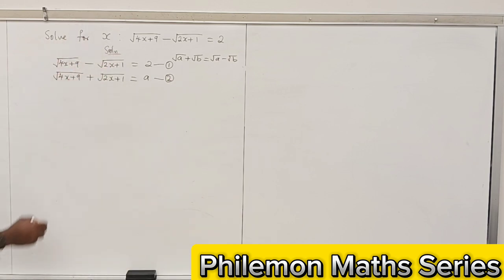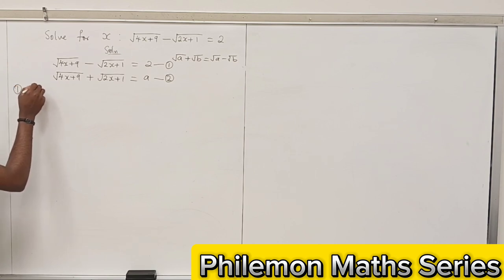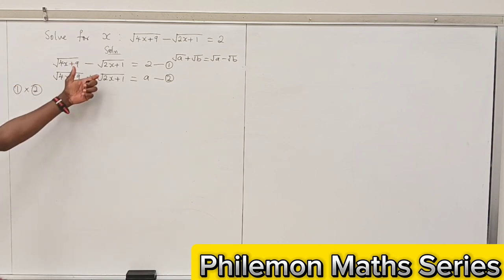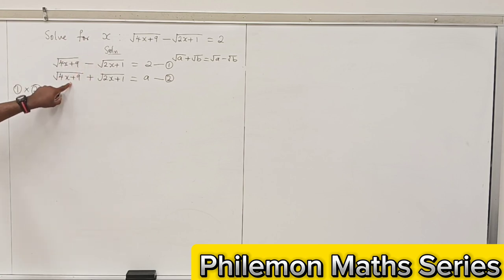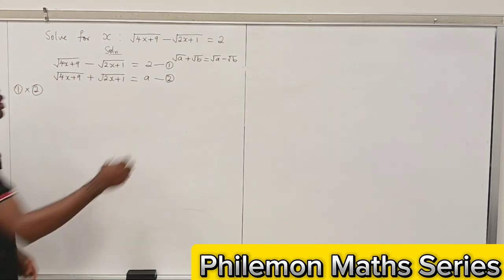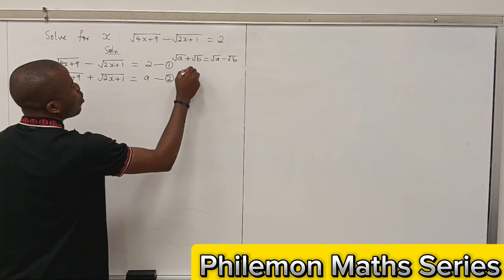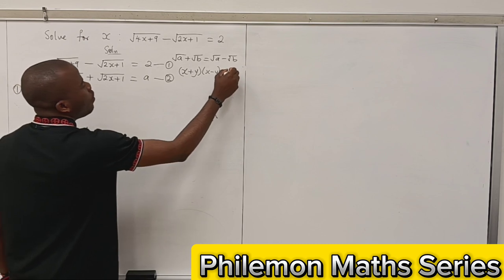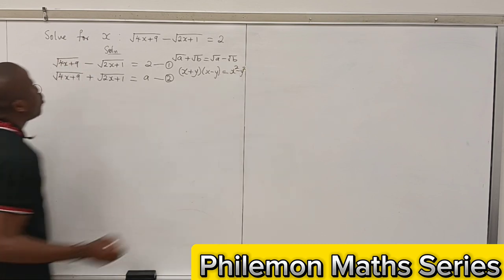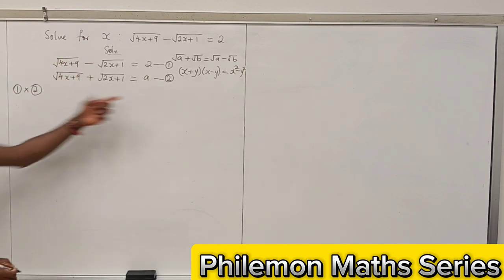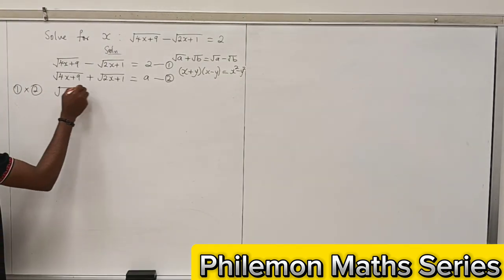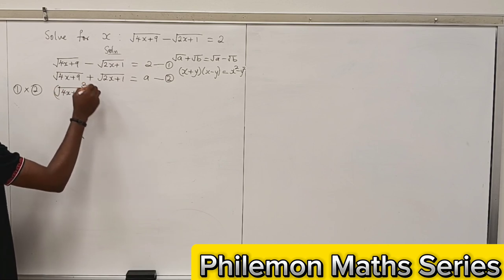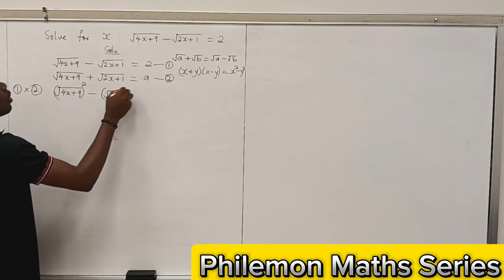Let's multiply equation 1 and equation 2 together. Notice that this is a difference of two squares. Remember, difference of two squares: (x plus y)(x minus y) gives x squared minus y squared. So this is a difference of two squares. From this, we'll have the first term squared — 4x plus 9 — minus the second term squared.